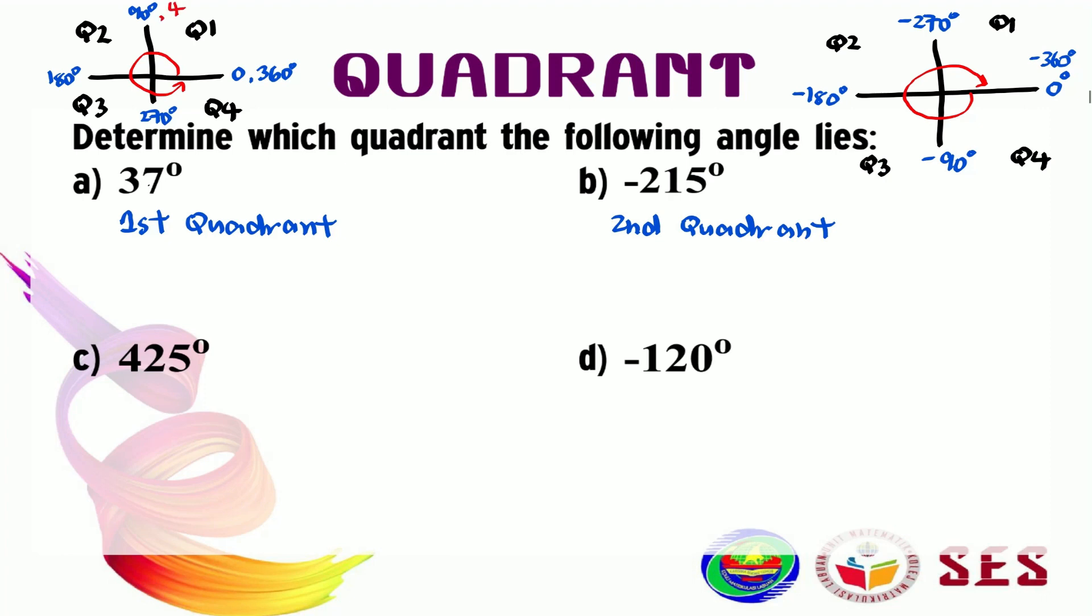This is 450 degrees. Moving on here, this is 540 degrees. Now, let's focus here. We know that 425 is between 360 and 450. Therefore, this angle belongs to the first quadrant.